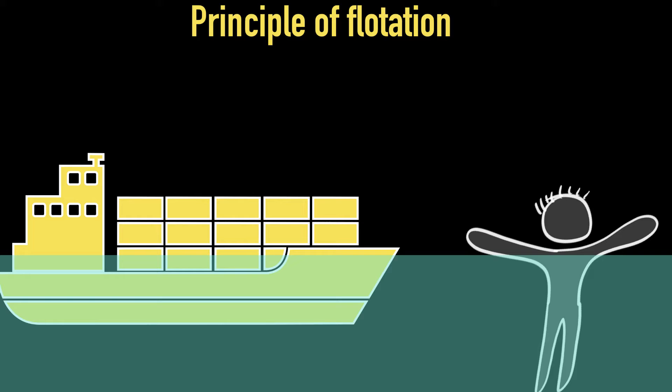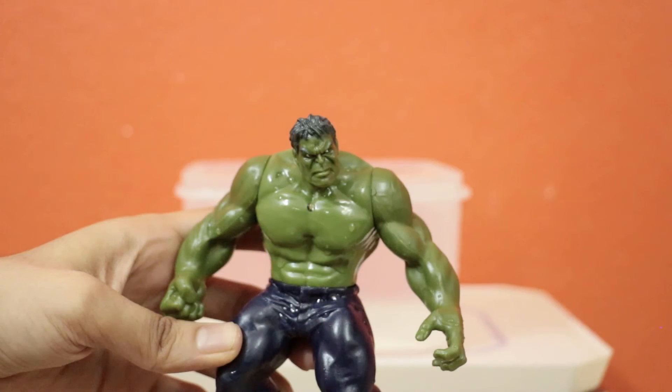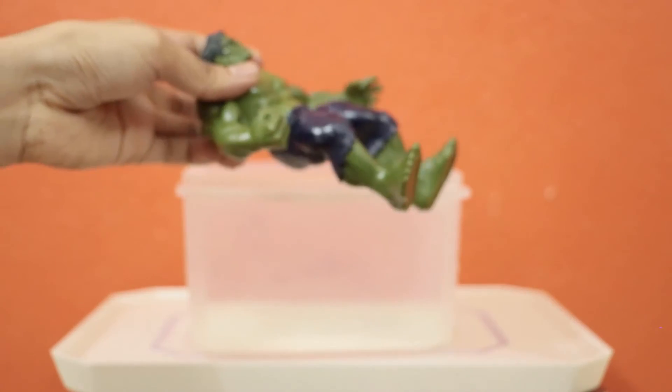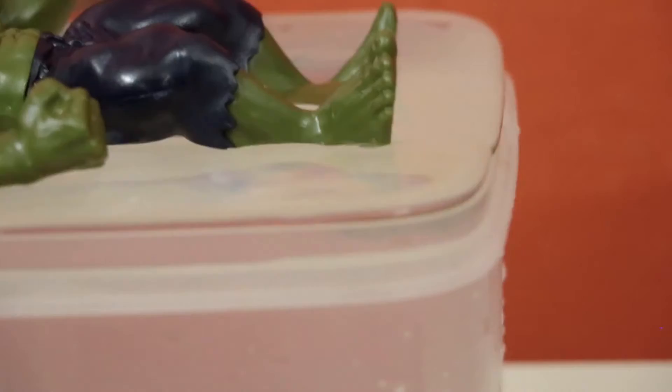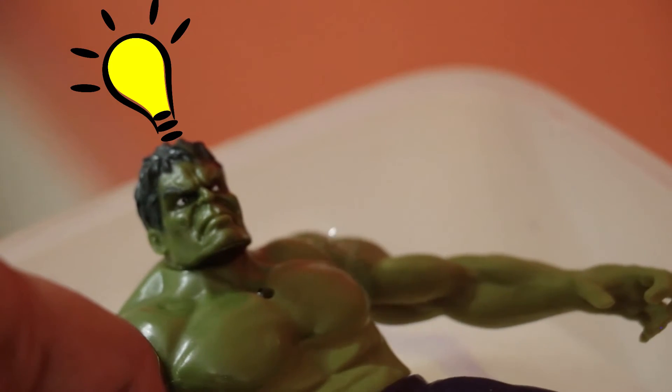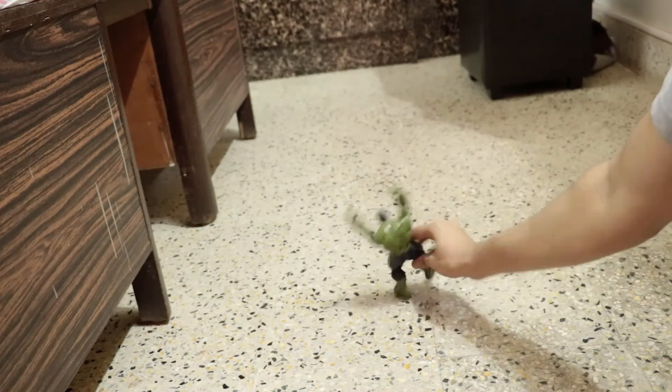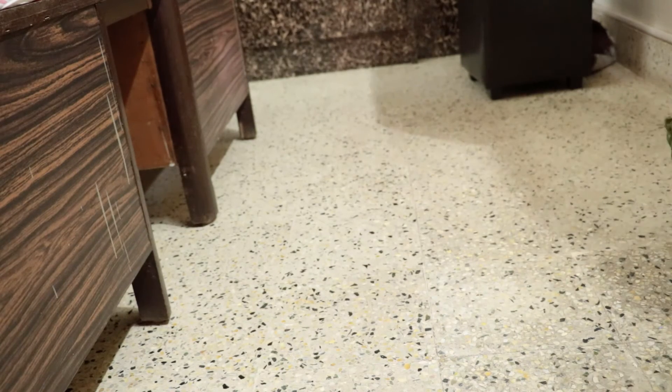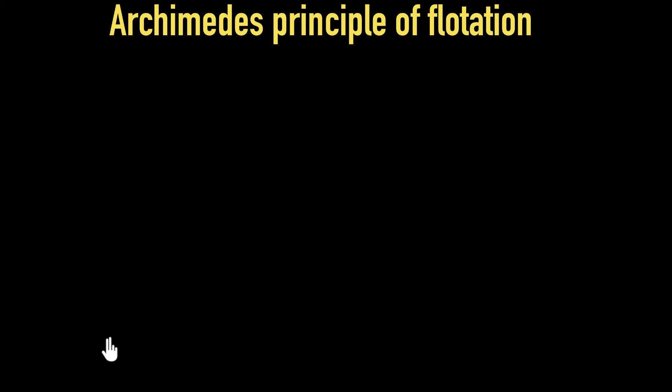And this principle was discovered by a Greek mathematician called Archimedes. As legend goes, one day when Archimedes—well, I'm using Hulk as I don't have an Archimedes action figure—when he stepped into his bathtub, he saw the water spilling out, a very common sight. But that day, something clicked in his head. He got so excited that he jumped out of the tub and started running through the city shouting Eureka, Eureka, which meant I have found it. What did he find?